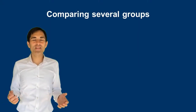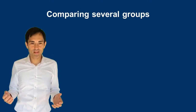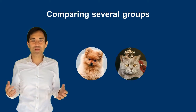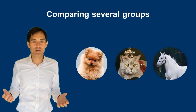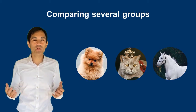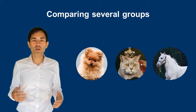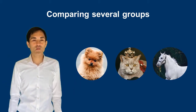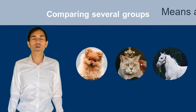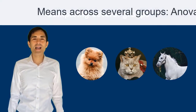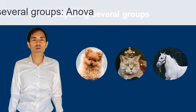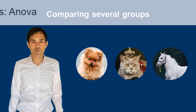Now let us add another group. Many people like dogs and cats, but also many people like horses. So we would like to compare several groups — not just two, it could be three, four, five, and so forth. That would be a very typical example for ANOVA, where you compare the means across several groups.